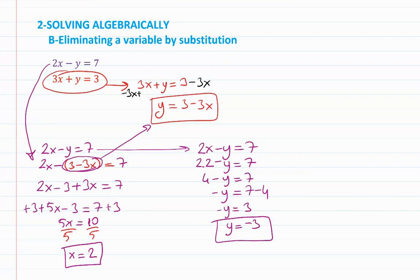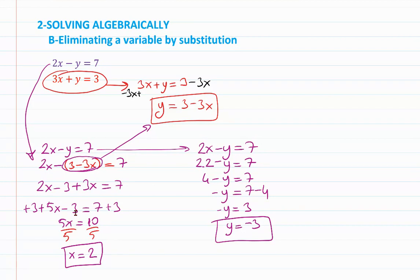Again we found (2, -3) as the solution. Working the same example all three ways, we are certain our solution is x equals 2 and y equals negative 3.